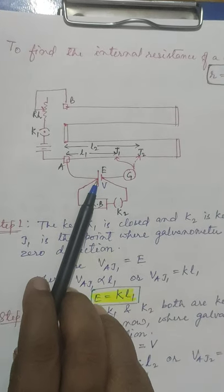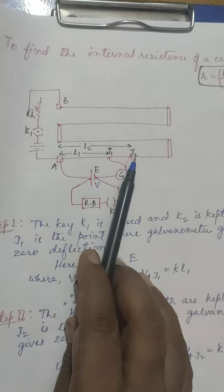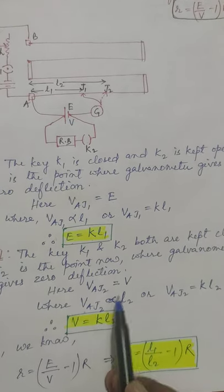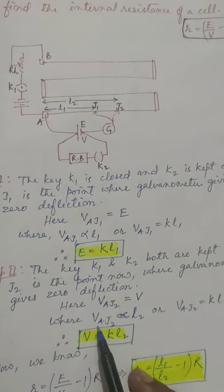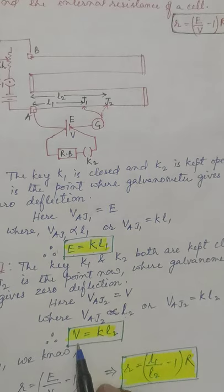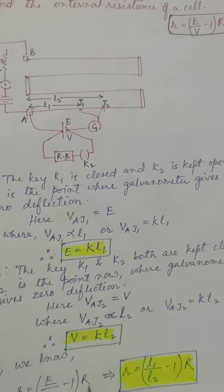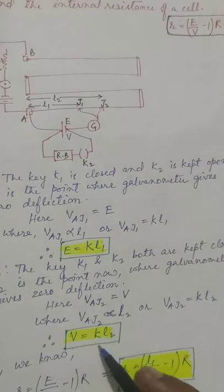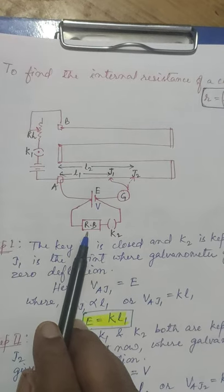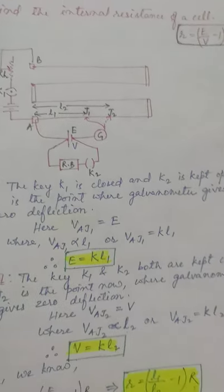The terminal potential difference V between the positive and negative terminals of the cell equals the potential difference between A and J2, that is VAJ2. By the principle of the potentiometer, VAJ2 is proportional to the length L2, so V = KL2. Substituting into the internal resistance formula r = (E/V − 1) × R, K cancels out and we get r = (L1/L2 − 1) × R, where R is the known resistance provided by the resistance box.